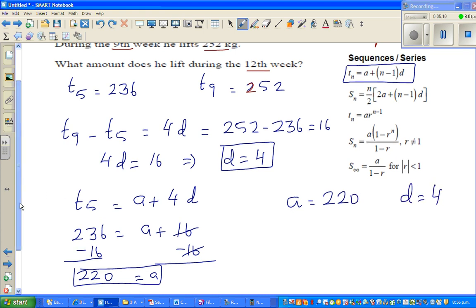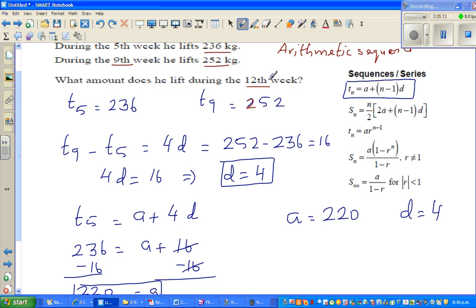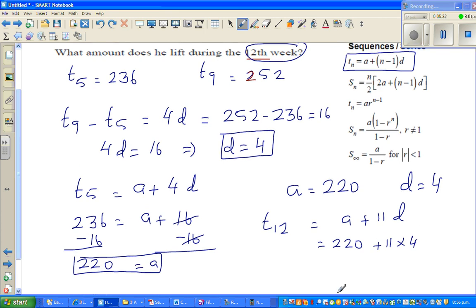Now the question is, what amount does it lift in the 12th week? Okay, so again using the formula, t12 would be a plus 12 minus 1, which is 11d, which is 220 plus 11 times 4. So using the BEDMAS rule, this is 220 plus 44.